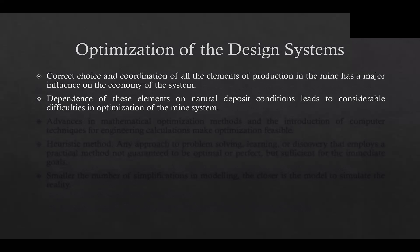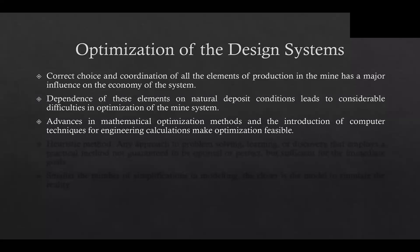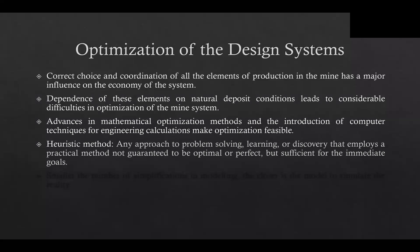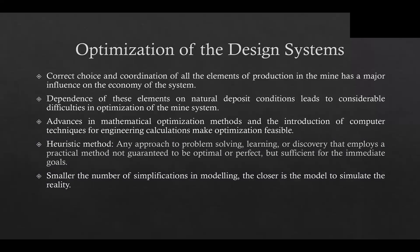To establish the optimum size and structure of the mine, it is necessary to make a complex analysis of the whole system. Advances in mathematical optimization methods and the introduction of computer techniques for engineering calculations make optimization feasible, although complicated. When seeking optimum solutions, the designer has the choice of using the heuristic method to find some immediate solution to the problem. This does not produce an exact solution, but it is useful in the first stage when design concepts are being solved. It eliminates blind search and uses previous experiences or techniques already used for similar situations. Simplifications are often made as it is difficult to model some factors; however, the smaller the number of simplifications in modeling, the closer the model is to simulating reality, although it will make the model more complex.